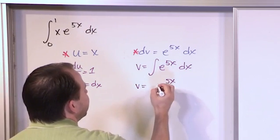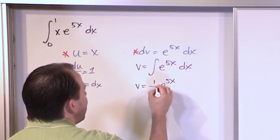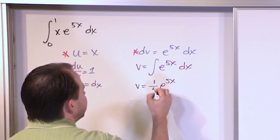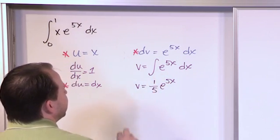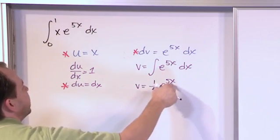In this case the derivative of 5x is 5, so it's 1 fifth e to the 5x.